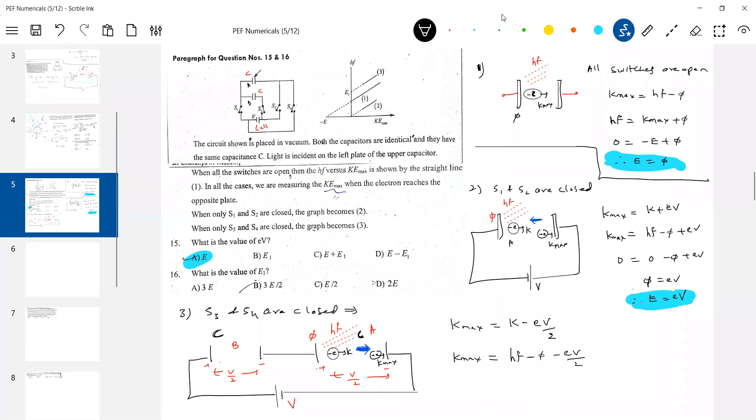Let's put what is value of when HF, when Kmax is 0, HF is E1. Now what is value of φ? φ should be E. What is value of E? Should be E by 2. So therefore, what is E1 equal to? 3E by 2.